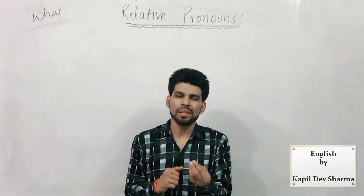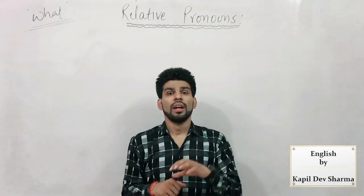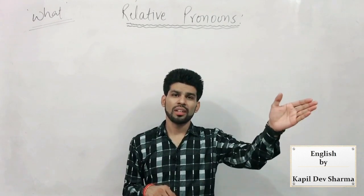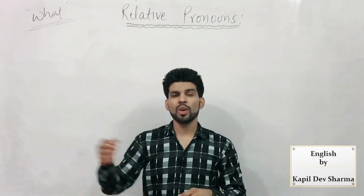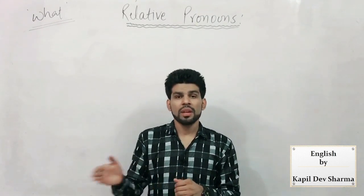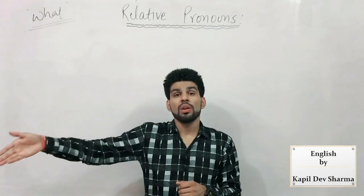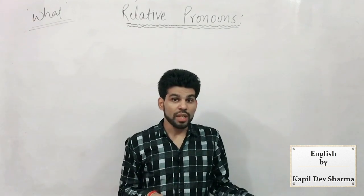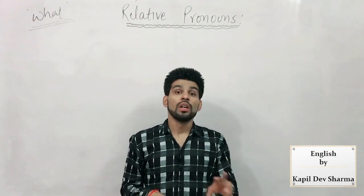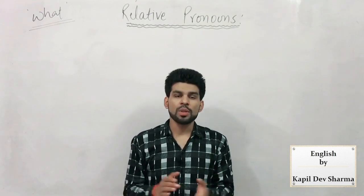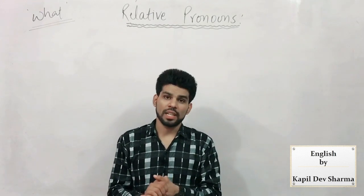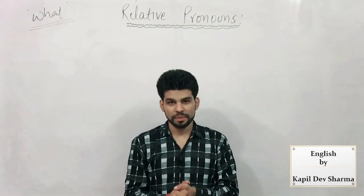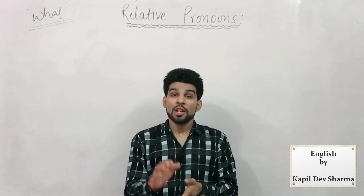With the help of a simple example: woh ladka — the boy — uske liye 'who' likhenge, not 'what'. Woh kitaab — the book — uske liye 'which' likhenge, not 'what'. Aur jab ladka aur kitaab thi, last video mein 'that' likh liya. Lekin ek choti si baat — jo ho gaya, so ho gaya — jo ho gaya, waapas nahi aa sakta.